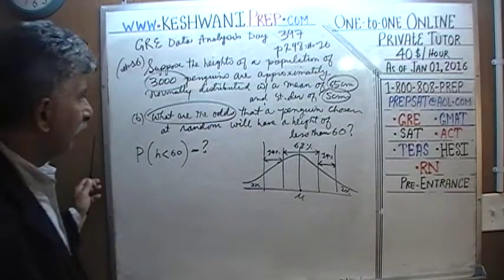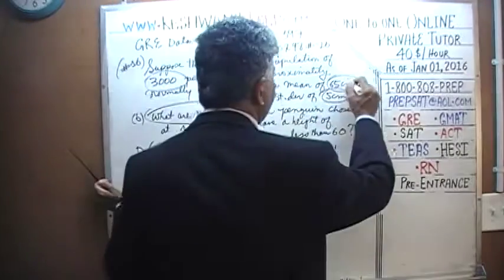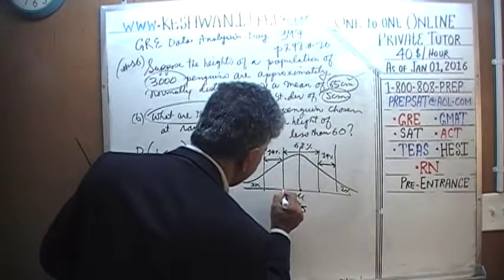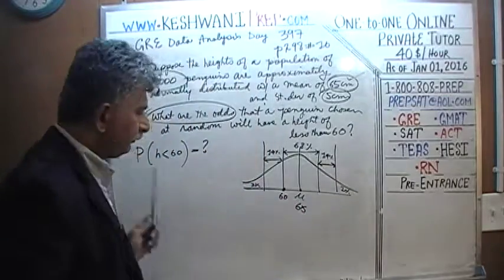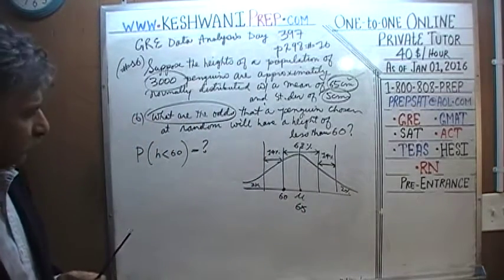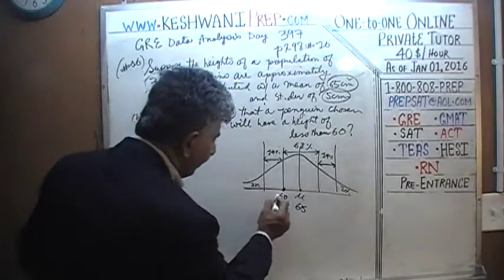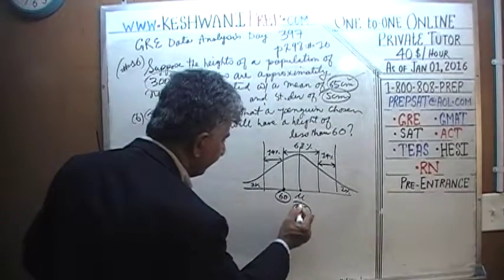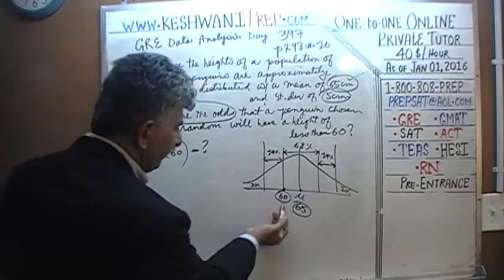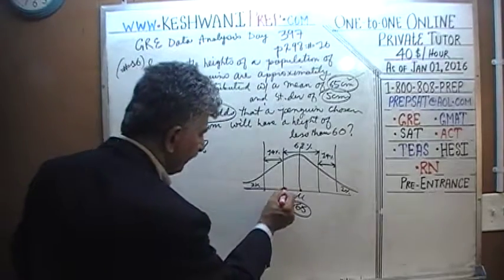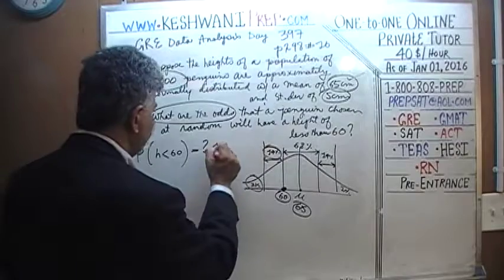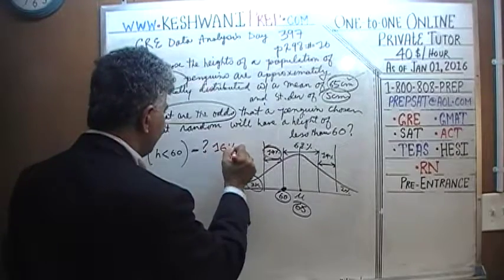Where does 60 fall? Our mean is 65, so 60 is one standard deviation below the mean. This is very simple and straightforward. The odds that the height is going to be below 60 — that region — is 14 plus 2, which equals 16%. The answer is 16%. That is the probability.